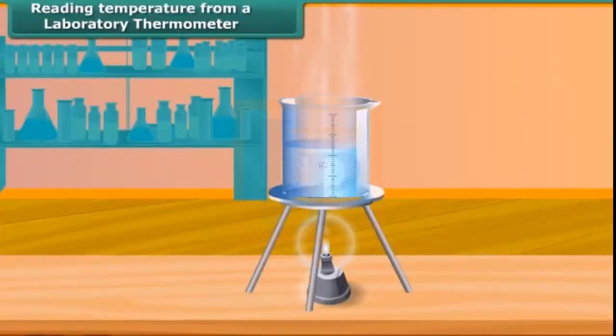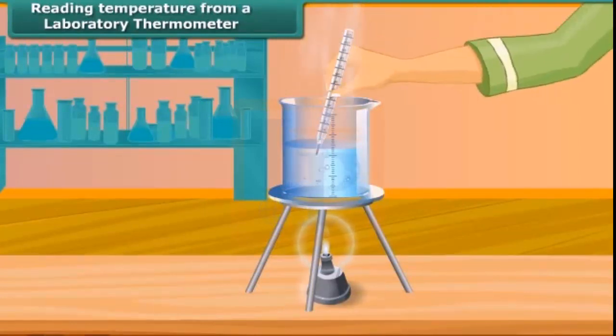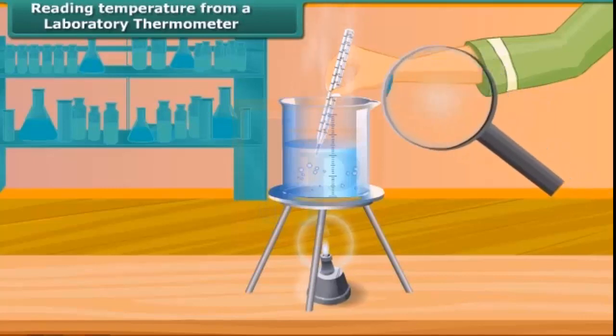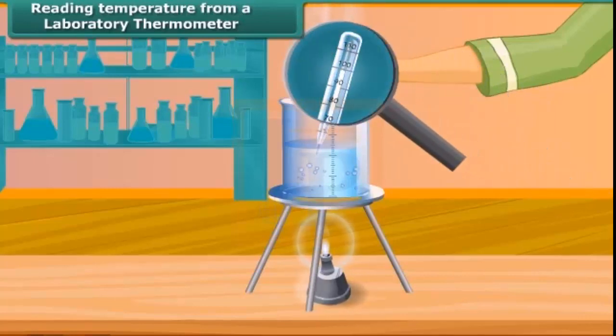Let us now measure the temperature of hot water kept in a beaker. Take a laboratory thermometer. Immerse the bulb of thermometer in hot water. See the shining thread of mercury moving up in the thermometer tube. After some time, the mercury thread will stop rising and stand at one place. Read the temperature on thermometer tube which corresponds to the top of mercury thread. This is temperature of hot water.